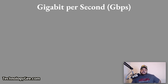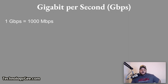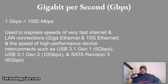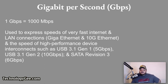One gigabit per second equals 1,000 megabits per second. Gigabits per second measurements are primarily used to express the speeds of very fast internet and LAN connections such as Gigabit Ethernet or 10 Gigabit Ethernet, and high-performance device interconnects such as USB 3.1 Generation 1, USB 3.1 Generation 2, and SATA Revision 3.